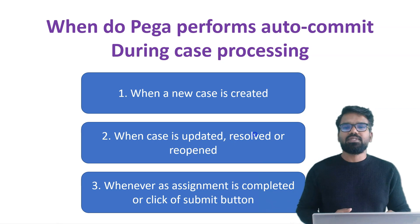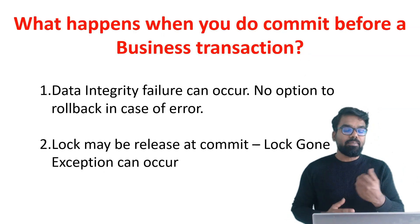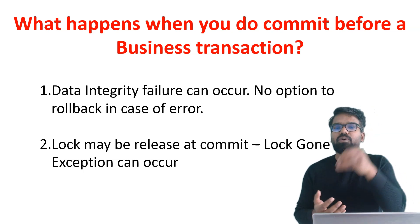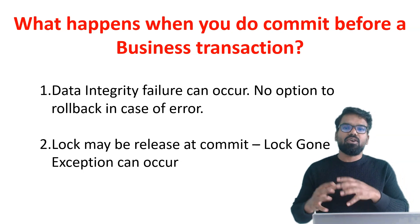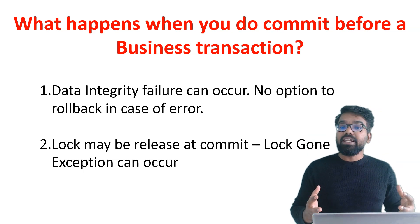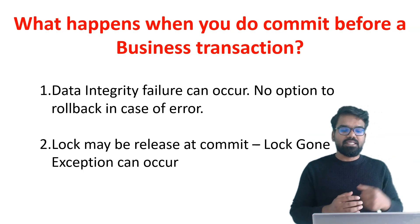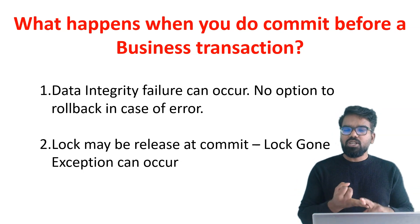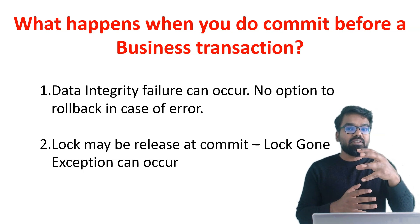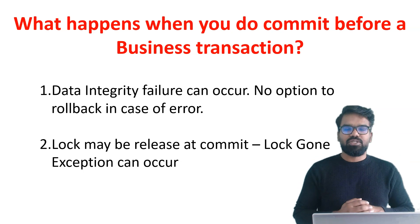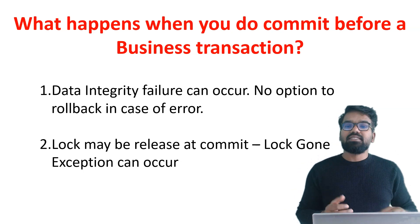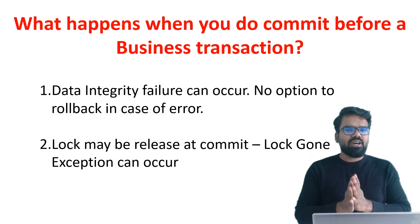The 'commit with error handling' activity not only does a commit but also can do a rollback — that is the power. If you really want to use commit, always try to go with commit with error handling, especially for background processing agents. Using explicit commit before a business transaction completes can cause data integrity failure — there is no way to rollback once you've submitted all your deferred saves into the database. Also, whenever you use obj open or obj open by handle, you have an option to release the lock on commit. If you use that option with an explicit commit, there are high chances you'll get a lock exception, because the lock may be released before the out-of-the-box commit operation is applied. Always follow best practice and never use explicit commit.